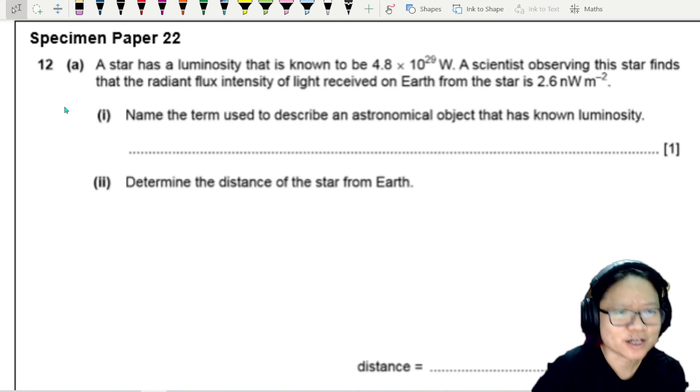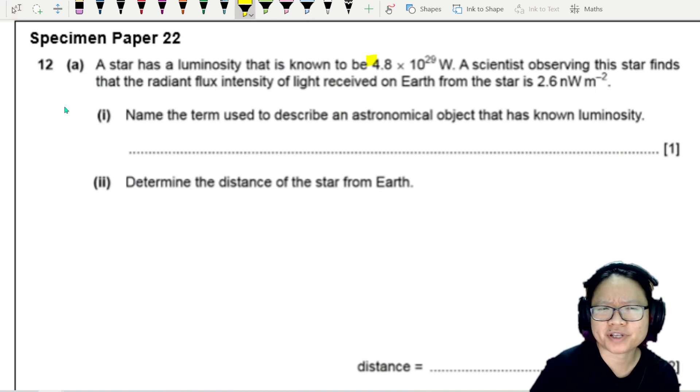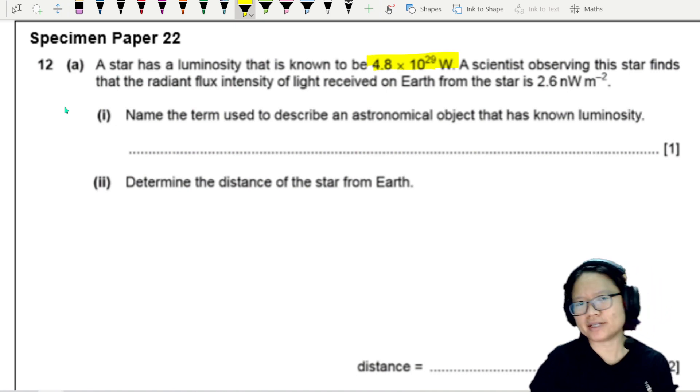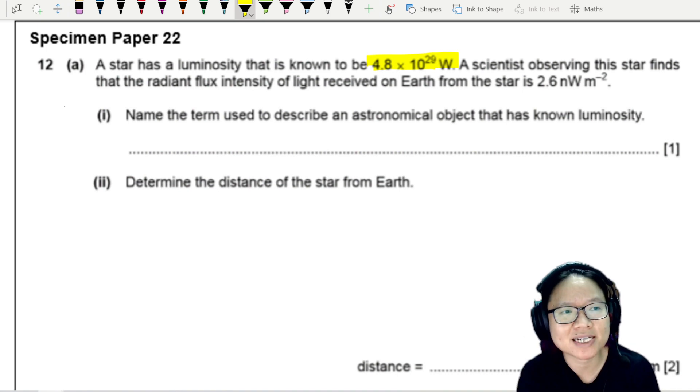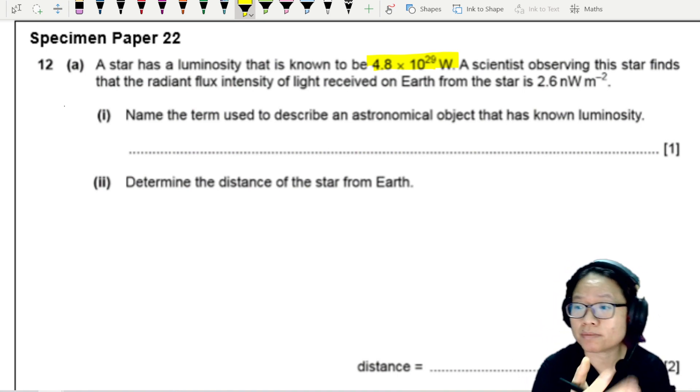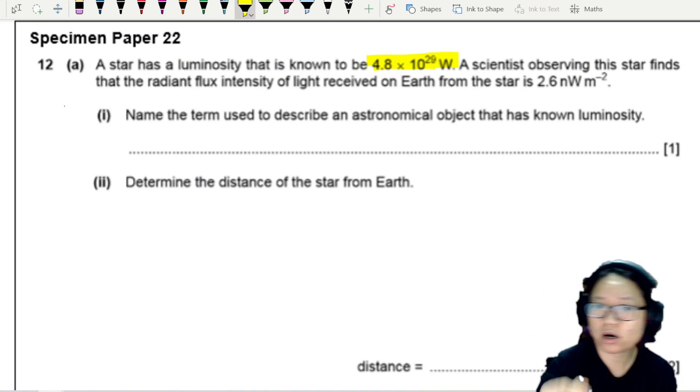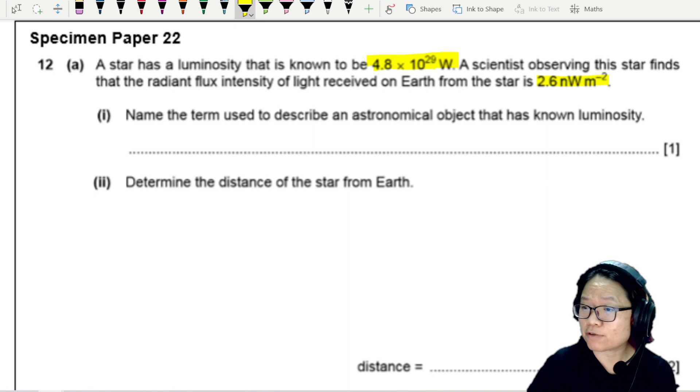A star has a luminosity known to be 4.8 times 10 to the power 29 watts. A scientist observing this star finds that the radiant flux intensity of light received on Earth from this star is 2.6 nanowatt per meter squared.